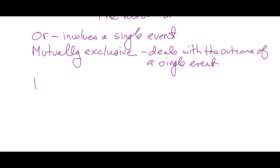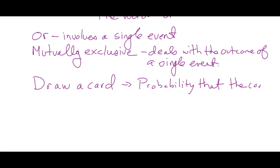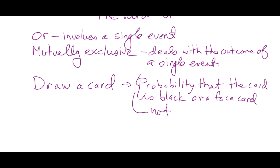Okay, so here are some examples. You draw a card — that's a single event. We want to know the probability that the card is black or a face card. Are those mutually exclusive or not? Not, because there are cards which are both black and face cards. If there's a card which is black and a face card, they're not mutually exclusive. There are black face cards. So this is not mutually exclusive.